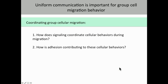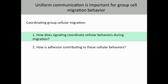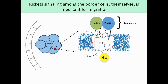The main point I want to drive home today is that uniform communication among the border cells is important for coordinating their migration. Specifically, uniform signaling among the border cells is important for coordinating migration. The signaling pathway I'm talking about today is the RICKETS signaling pathway. RICKETS is a G-protein-coupled receptor, and the known ligand is Bursicon. I found that both RICKETS and the ligand Bursicon are required within the border cells for migration, so RICKETS signaling is utilized for communication within the border cells.